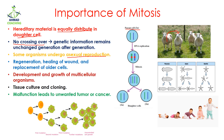Moreover, some organisms undergo asexual reproduction, and for asexual reproduction the process of mitosis is very important. For example, in planaria, in hydra, and in starfish, they perform asexual reproduction by dividing their body into two parts. Each part is then regenerated with the help of mitosis. If mitosis were not present, asexual reproduction could not take place.